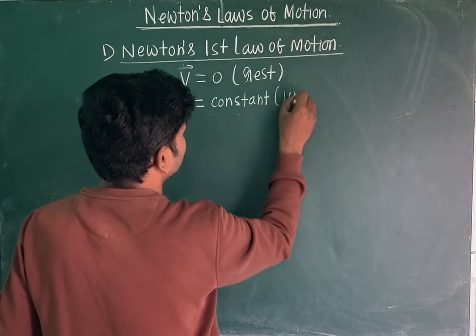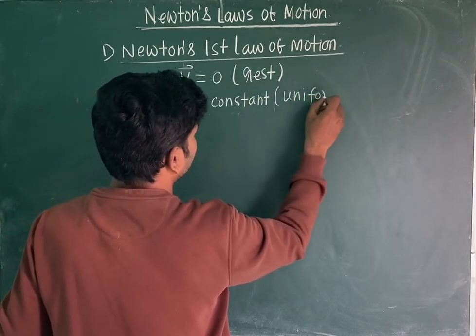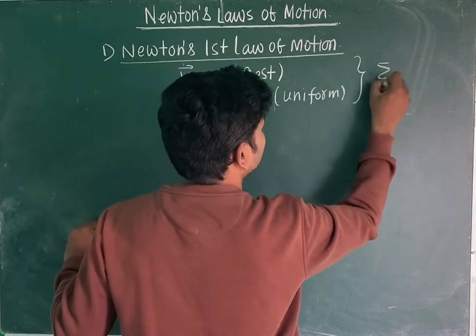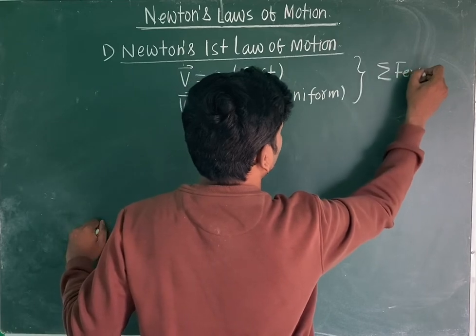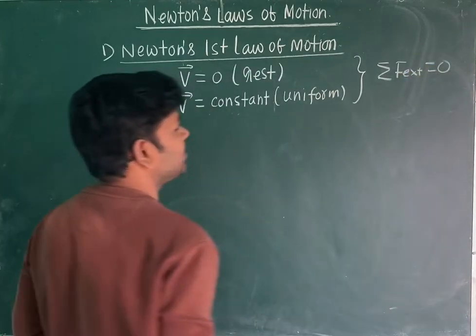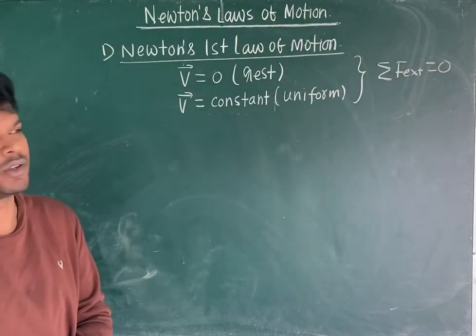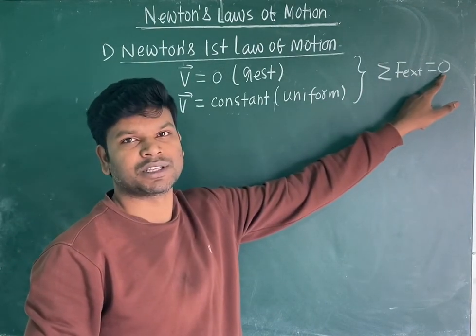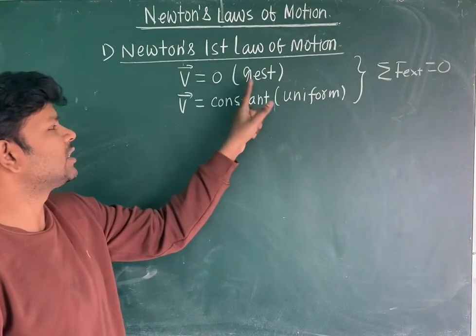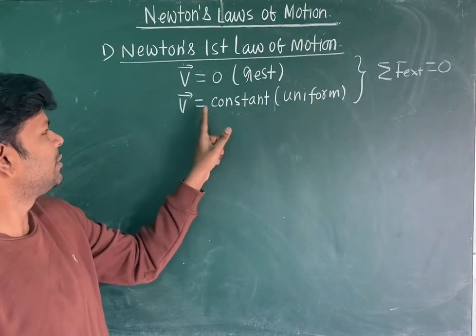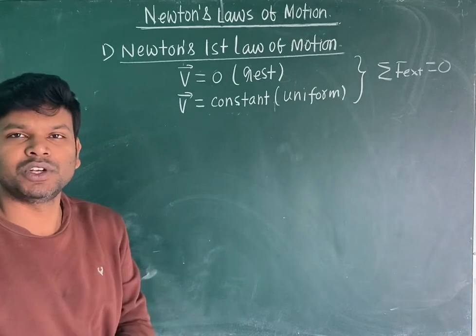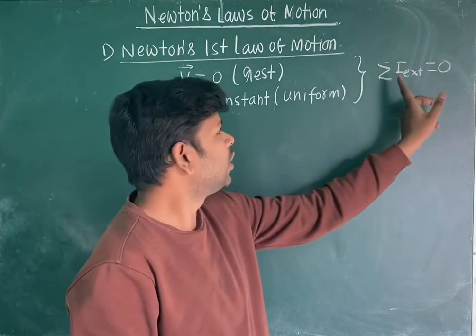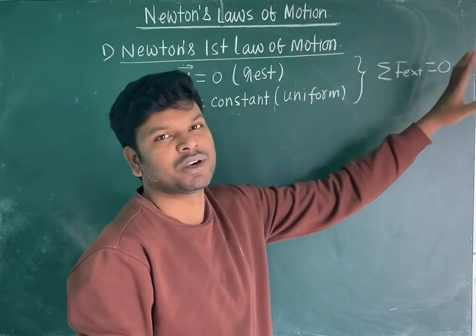If these two conditions are satisfied, then there will be net external force acting on the system which is equal to zero. So this is basically Newton's first law: if the net external force acting on a system is equal to zero, then the object will be either in the state of rest or in the state of uniform motion. Now what will happen if the net external force is not equal to zero?